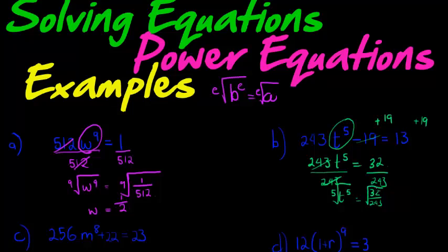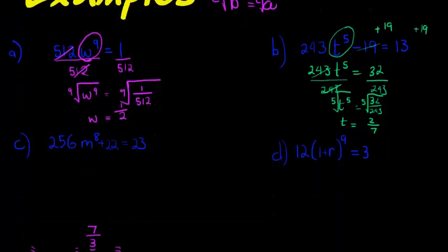The fifth root on both sides gives me that T is equal to, now the fifth root of 32 is just 2, the fifth root of 243 is 7. So T is equal to 2 over 7. Should it be plus or minus? No, because I'm working with an odd exponent.